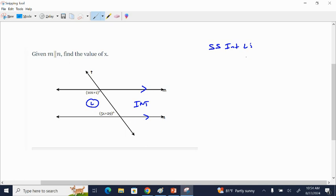And if lines are parallel, same side interior angles are supplementary, which means these two guys are going to add to 180. So I'm going to create an equation, adding those two angles and setting it equal to 180. So I'll start with the 10X plus 1 plus 5X plus 29 equals 180.